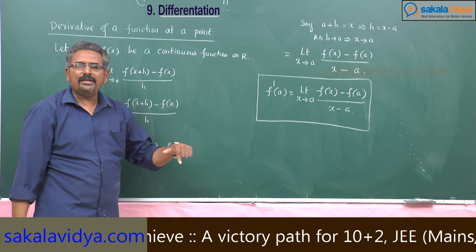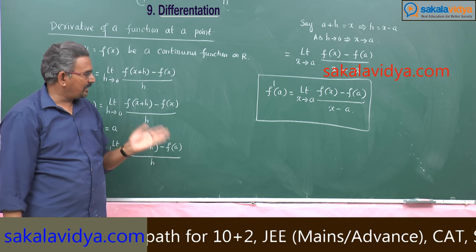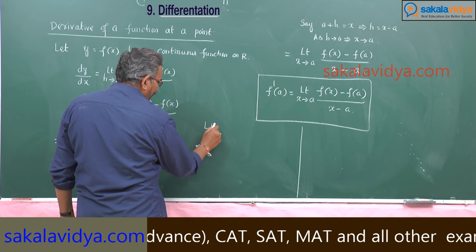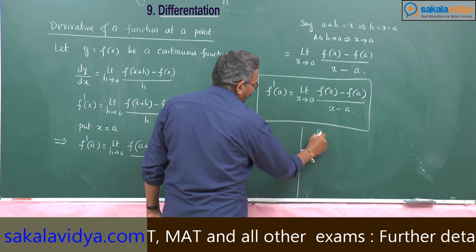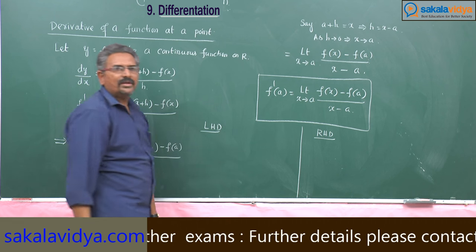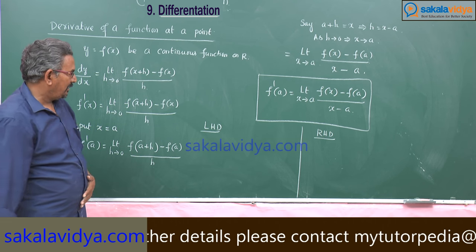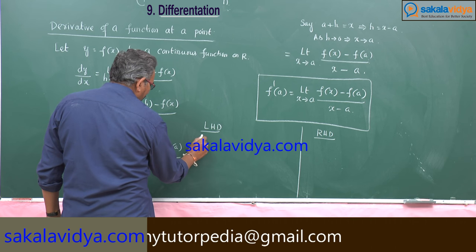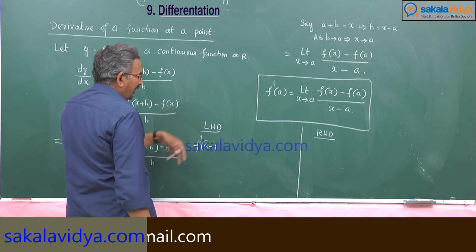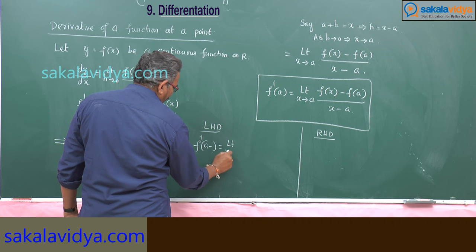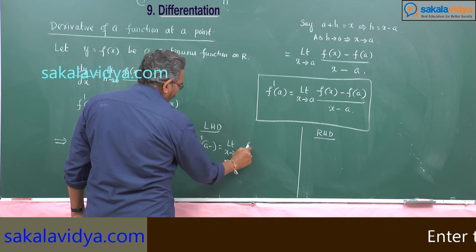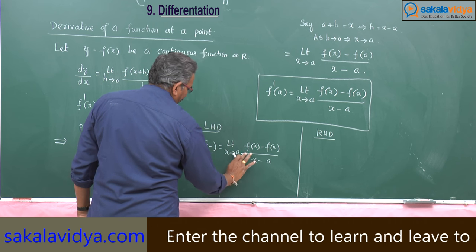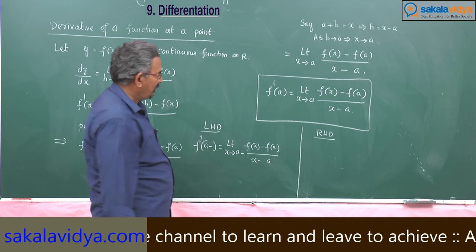Sometimes f dash a may or may not be defined. That is why we have to check the left hand derivative as well as the right hand derivative. The left hand derivative, f dash a minus, is defined as limit x tends to a minus, f of x minus f of a by x minus a. Now, what is the right hand derivative?